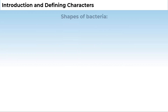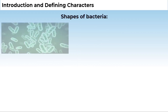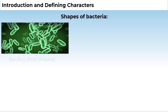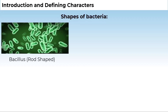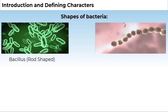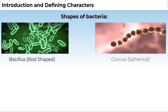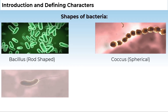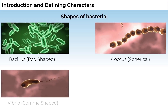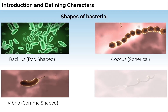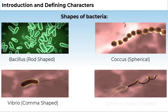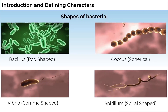Bacteria are grouped under four categories based on their shape: the rod-shaped bacillus, the spherical coccus, the comma-shaped vibrium, and the spiral-shaped spirillum.